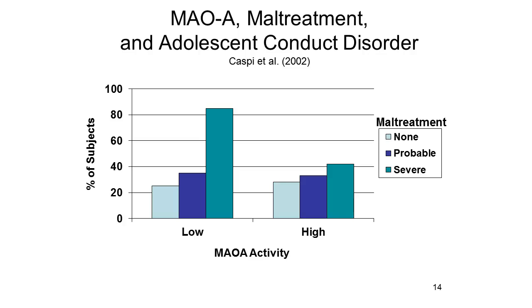The MAO-A gene is not by itself sufficient, nor, for that matter, is a history of maltreatment. It's the interaction of the genetic diathesis and the environmental stress that does the work.